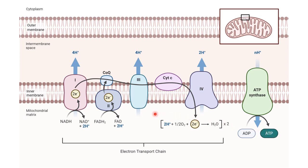First, let us take a quick look at the anatomy of the mitochondrion. The mitochondrion is a small organelle with a double membrane, and it has a liquid inner portion called the mitochondrial matrix.